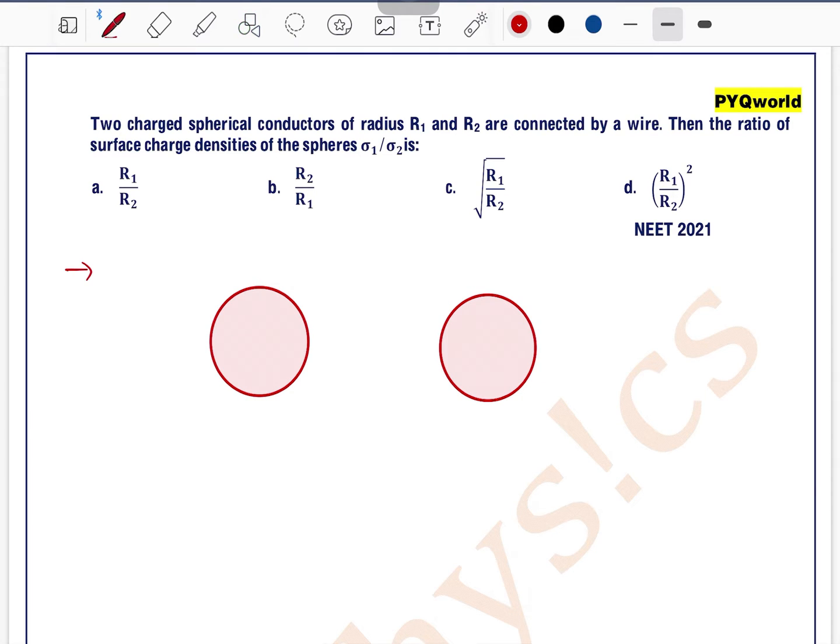This is sphere 1, let's say this is sphere 2, both having radius r1 and r2. Let's say charge on sphere 1 is q1, charge on sphere 2 is q2.